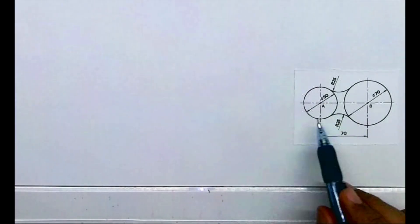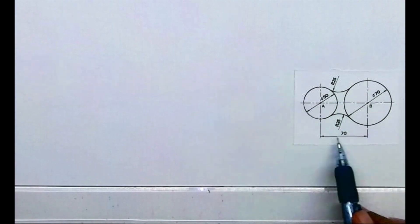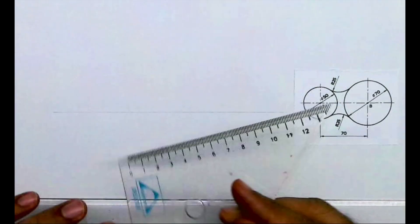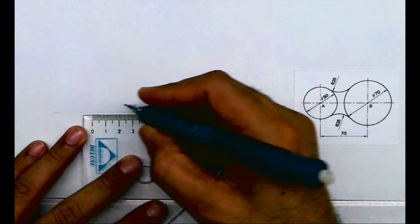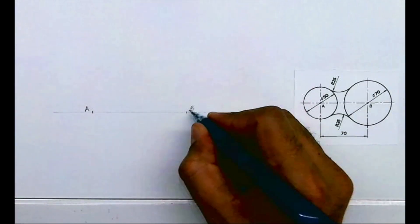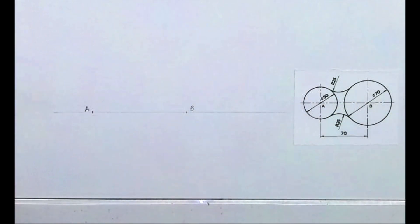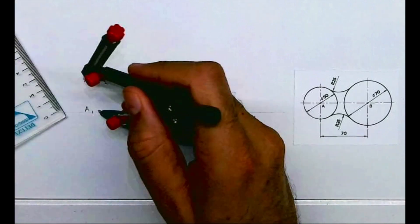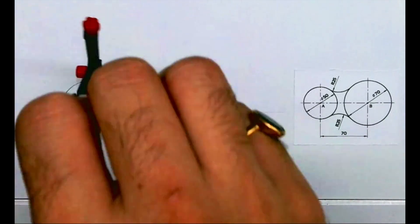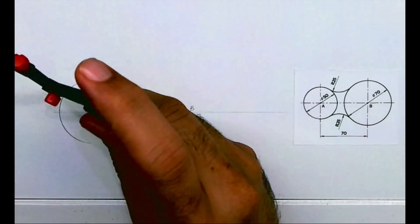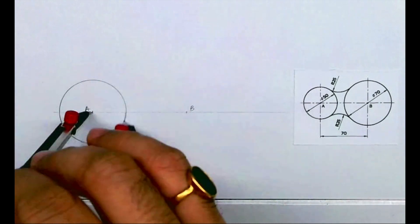Welcome to technical drawing. Today we'll copy this diagram. First, we need to draw two circles of diameter 50 and 70 at a distance of 70. I will mark points A and B. From point A, I will draw radius 25 (that is diameter 50), and from point B, I will draw radius 35 (that is diameter 70).